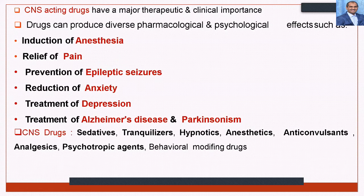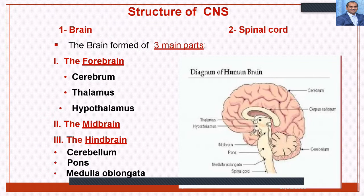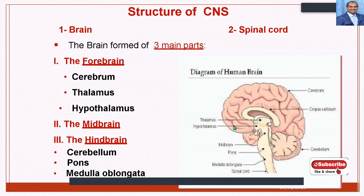Many more classifications exist, such as muscle relaxants. Regarding CNS anatomy, the brain is the integral part of the Central Nervous System and the spinal cord is another important structure. The brain is formed into three parts: the forebrain, which contains the cerebrum, thalamus, and hypothalamus.